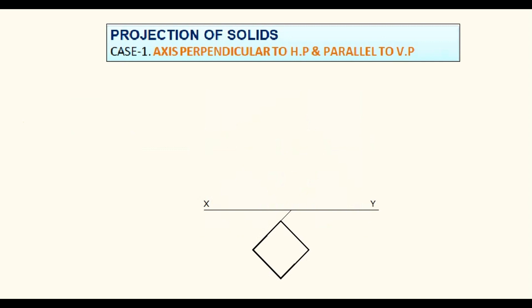Join the diagonals because the slant edges of the pyramid are visible in the plan. Name the corners with numbers. Name the apex point also.